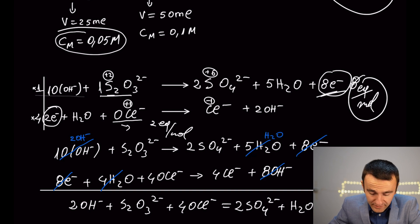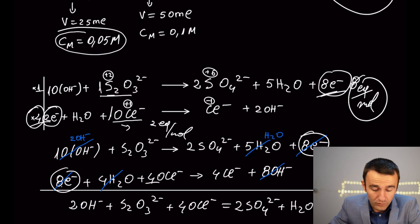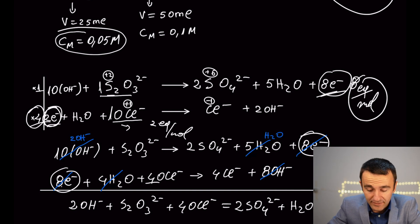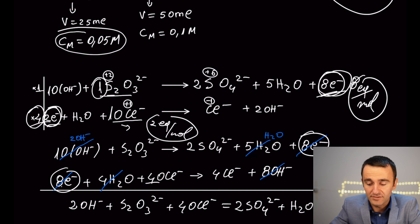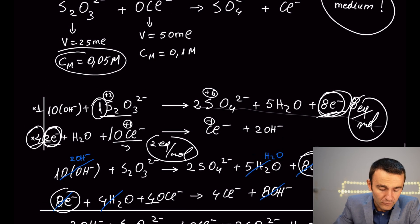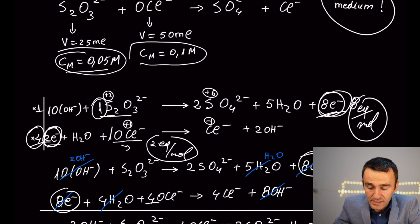Be careful: when you balance the equation you may multiply by four, getting eight electrons on each side to balance the redox reaction. But for equivalents per mole, focus on one mole: hypochlorite accepts two electrons per mole — that is two equivalents per mole — and thiosulfate donates eight electrons per mole — that is eight equivalents per mole.